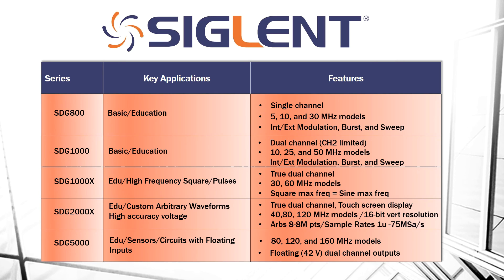The best overall value is going to be the SDG 2000X, primarily because for the dollar it does everything really, really well. It also has a high degree of resolution, has a LAN input as well as USB for remote control. Arbitrary waveforms are flexible from the TrueArb technology, and it's full dual channel. So if you weren't quite sure what you're going to be working on in the future but wanted a really flexible instrument, I'd start with the SDG 2000X series.